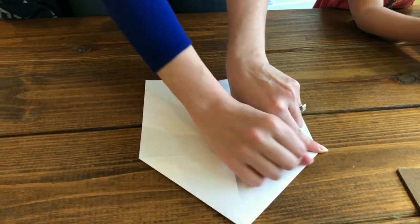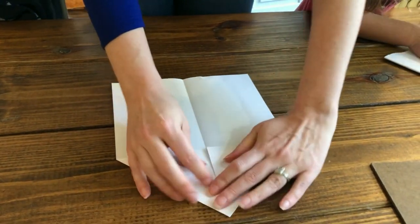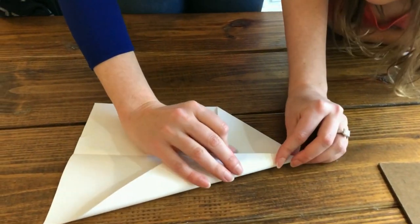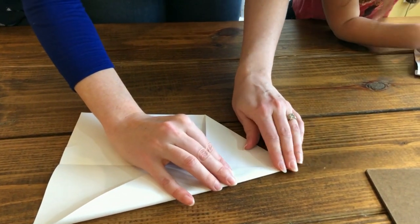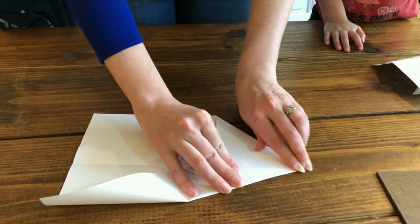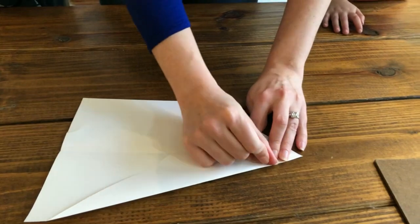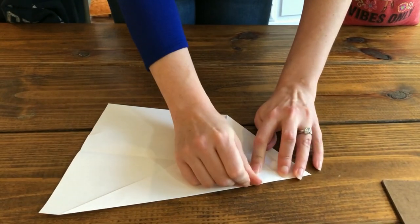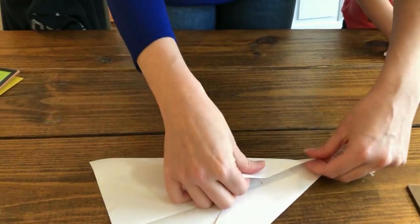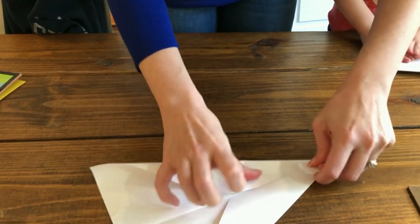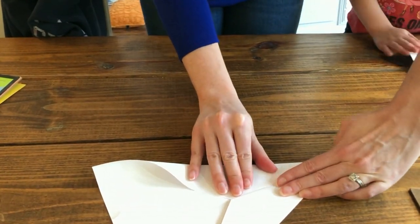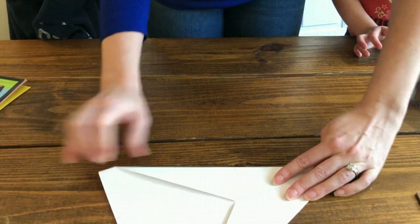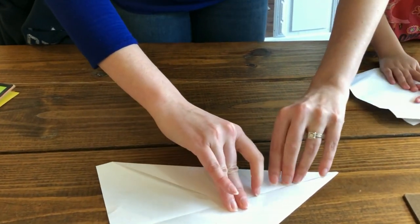And then when I was a kid I always folded this down again, so I'm going to fold that down again. Again, get a nice crisp line. So we kind of have the basic shape of our airplane.